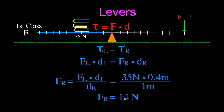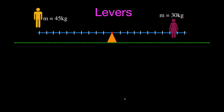That was example one. Now for example two — another first-class lever problem because the fulcrum is in the middle. This is a teeter-totter problem. We have a girl with a mass of 30 kilograms, and we want to know where another person would have to sit to make the lever balance. We're solving for the distance on the left, and we know the two masses and one of the distances.